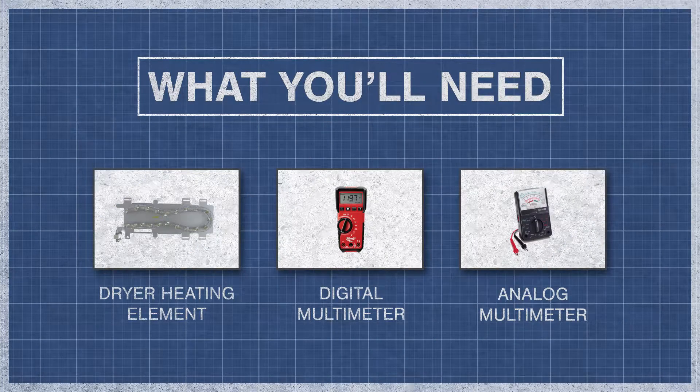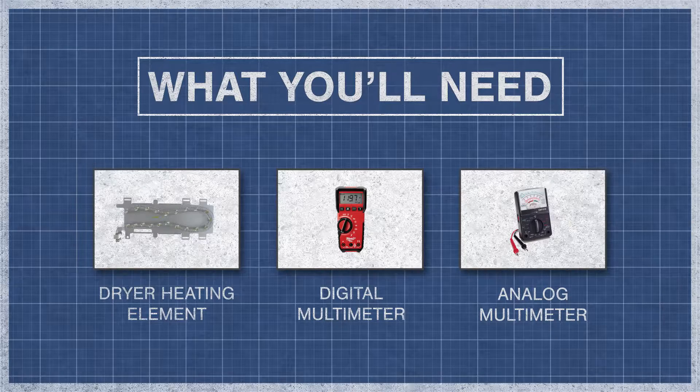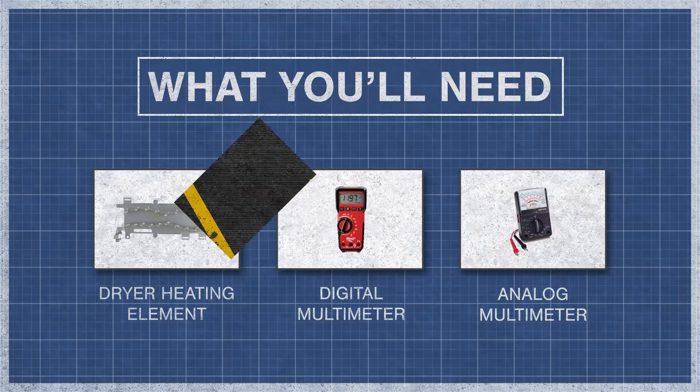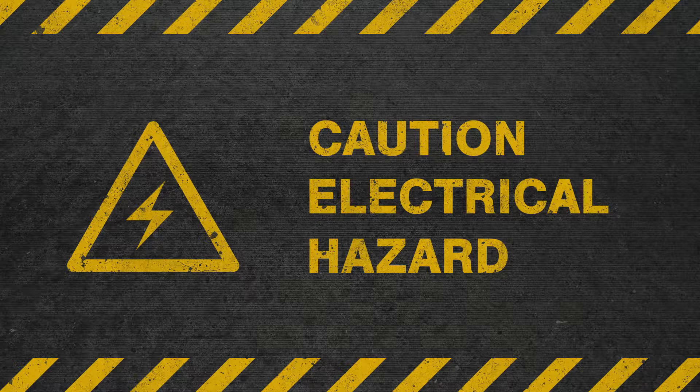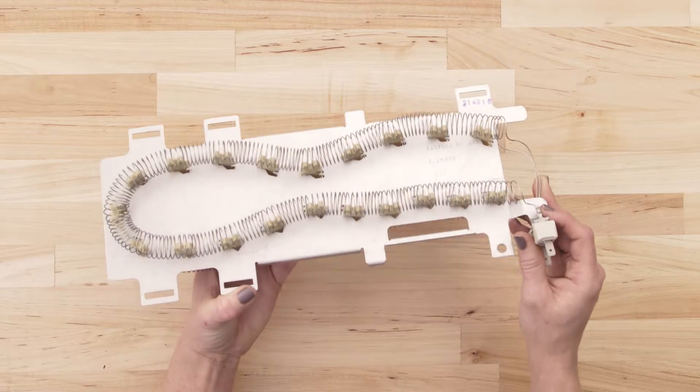All you'll need is your dryer heating element and a digital or analog multimeter. To be safe, turn off the breaker and fully unplug the dryer from the receptacle. Now separate or remove the heating element.